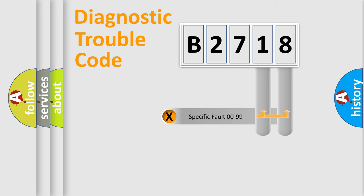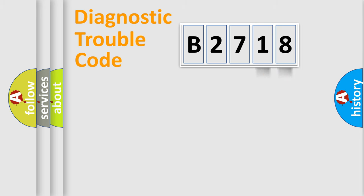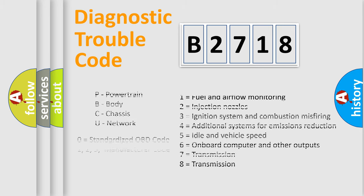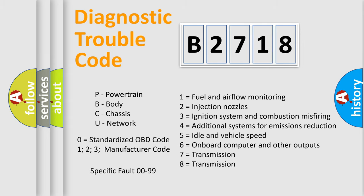Only the last two characters define the specific fault of the group. Let's not forget that such a division is valid only if the second character code is expressed by the number zero.